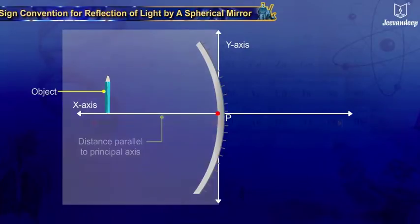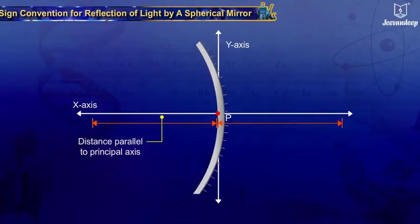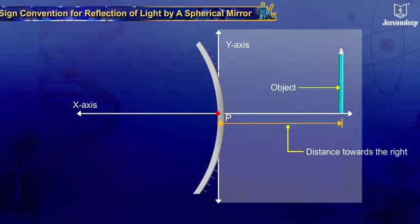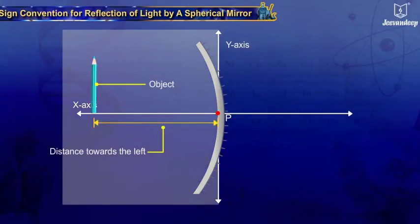Two, all distances parallel to the principal axis are measured from the pole of the mirror. Three, all distances measured to the right of the origin (pole) are taken as positive, while distances measured to the left of the origin are taken as negative.